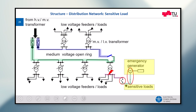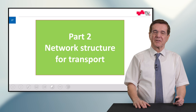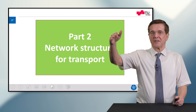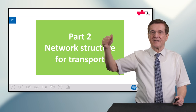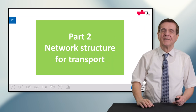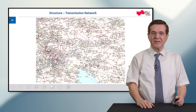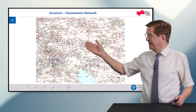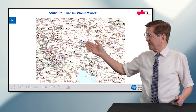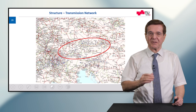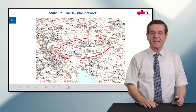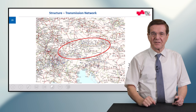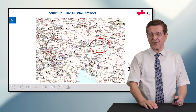Now we come to Part 2: network structure for transport. Transportation means bringing electricity over long distances, usually in high quantities of power — hundreds of megawatts. Here you can see a section of the central eastern European network; my home country Austria is highlighted in the red circle. Now let's concentrate on the quality and reliability of the supply to the capital Vienna.